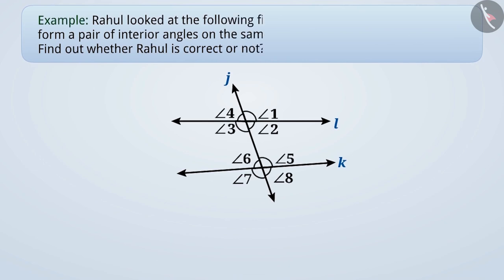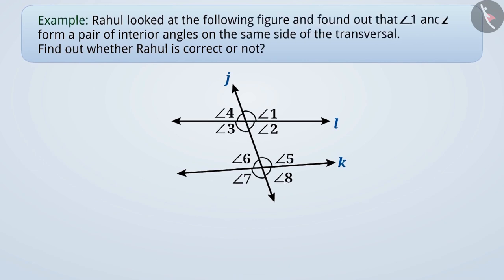Rahul looked at the following figure and found out that angle 1 and angle 2 form a pair of interior angles on the same side of the transversal. Find out whether Rahul is correct or not.